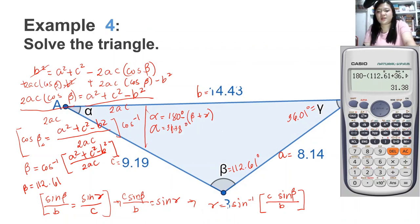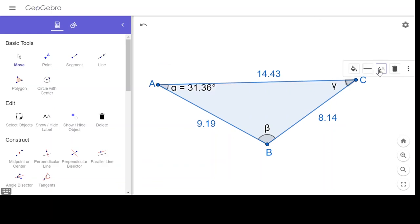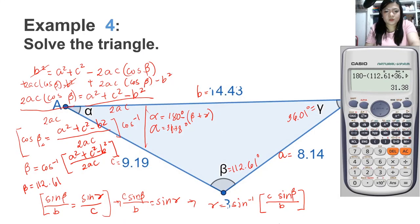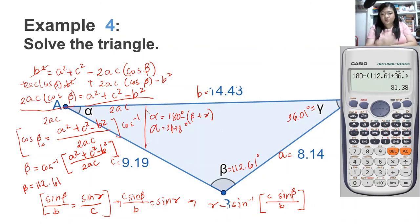Let us see in GeoGebra if the measure of the angles matches our solution. There's a slight difference between our solution and the answer in GeoGebra, only because we rounded off to two decimal places when solving. This will be the last example for this lesson.